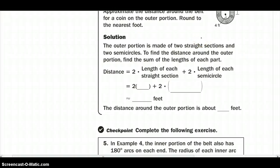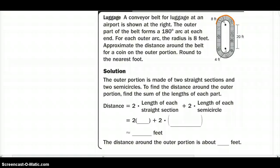So the outer portion is made up of two straight sections and two semi-circles. To find the distance around the outer portion, find the sum of the lengths of each part. So we know that the straight edge is, we have 20 on both sides, so we can automatically find that to be 40, plus 2 times, we know we have a semi-circle, so we're going to take half of its circumference, times 2 pi times our radius would give us 8, and we would approximately get 2, or 1 half times 16 pi, which would go to 8 pi.